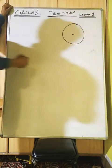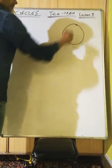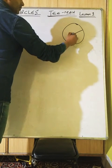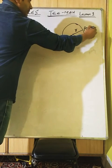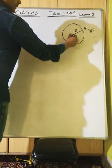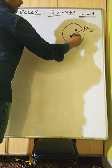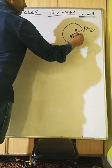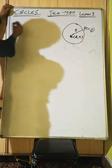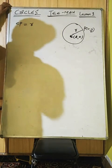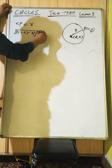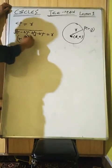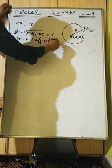A circle is the locus of a point which moves in a plane such that its distance from a fixed point — the center — is always constant. Suppose the point is P(x,y) and center is (h,k). By the distance formula, CP = √[(x−h)² + (y−k)²] = r, so squaring: (x−h)² + (y−k)² = r².